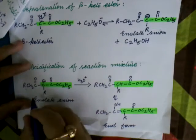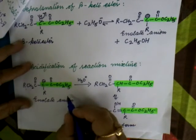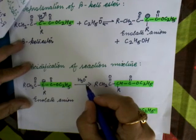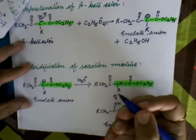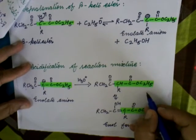In the last step, the enolate ion is neutralized in the presence of aqueous acid like sulfuric acid and phosphoric acid, and in the neutral form then it is isolated.